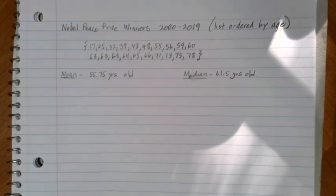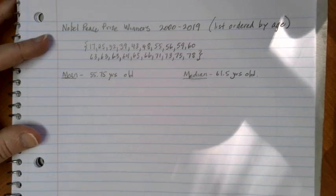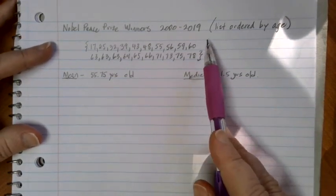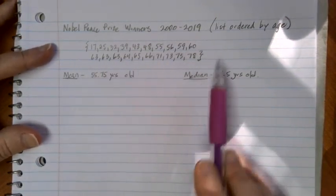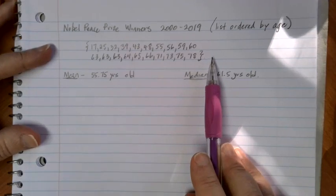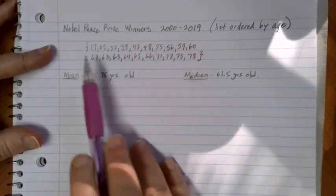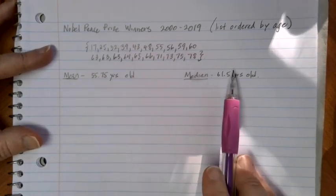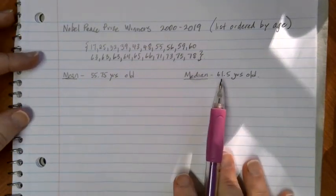In the last video we were taking a look at the Nobel Peace Prize winners from the year 2000 to 2019. Here I have listed out those 20 different ages of the prize winners in order from youngest to oldest for our reference as we're going through things today.